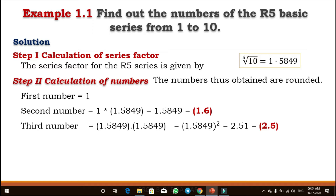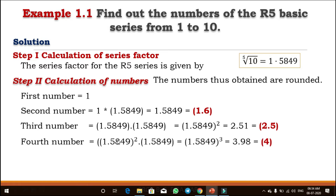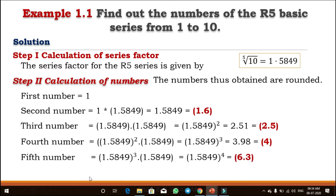In a similar way, to calculate the fourth number, we take the third number and multiply by the series factor again. The third number is 1.5849 squared, multiplied by 1.5849, which becomes its cube. We get 3.98, and after rounding off we get 4 as the fourth number.